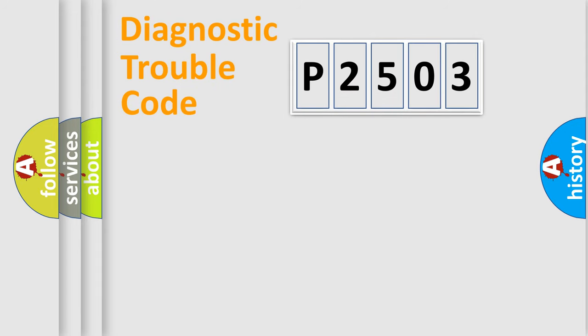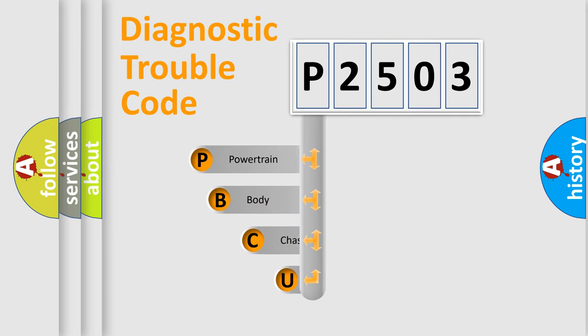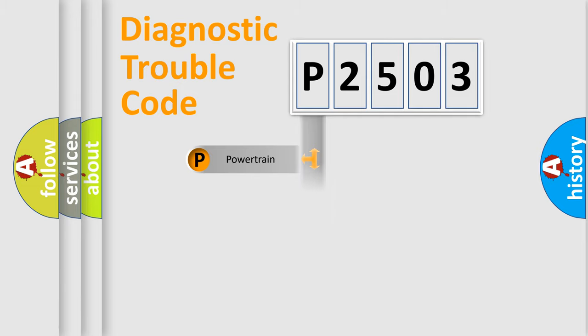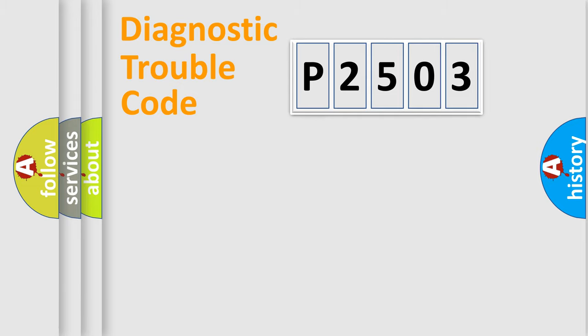First, let's look at the history of diagnostic fault code composition according to the OBD-II protocol, which is unified for all automakers since 2000. We divide the electric system of an automobile into four basic units: Powertrain, Body, Chassis, and Network.